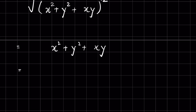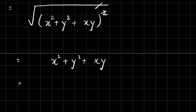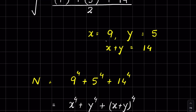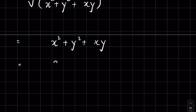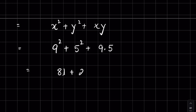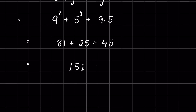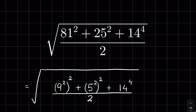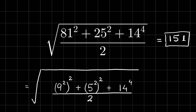Substituting x equals 9 and y equals 5: 9 squared plus 5 squared plus 9 times 5 equals 81 plus 25 plus 45, which equals 151. So the final answer is 151.